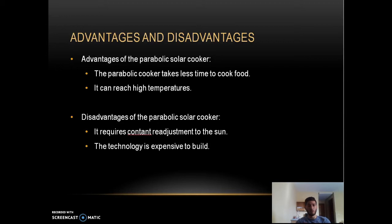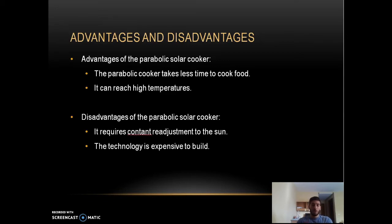The advantages of the parabolic solar cooker: it takes less time to cook food — actually the same time as a gas burner — making it very convenient, and it can reach high temperatures so it can be used to fry and grill foods. The disadvantages: it requires constant readjustment to follow the sun, and the technology is expensive as it is very difficult to hand-craft a parabolic solar cooker.